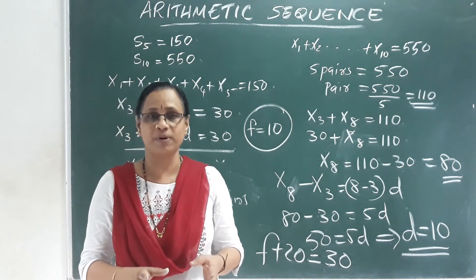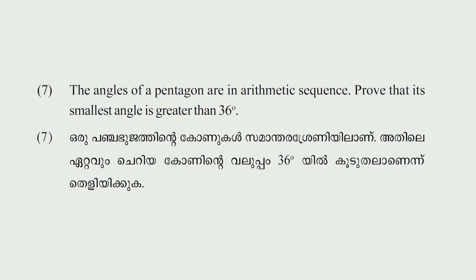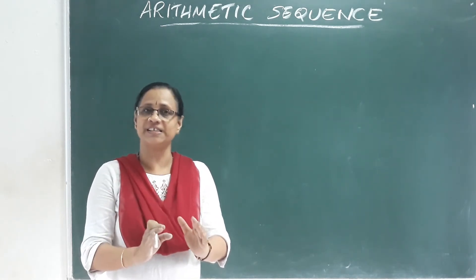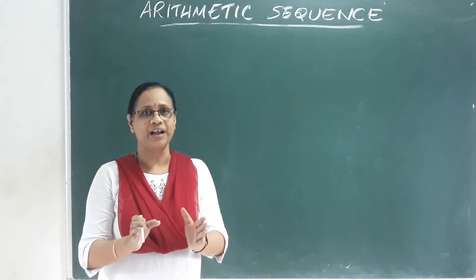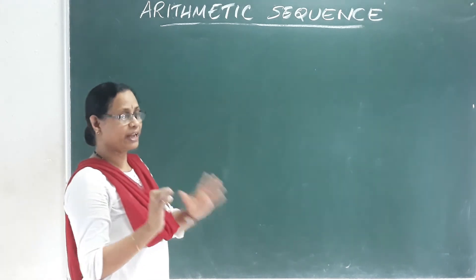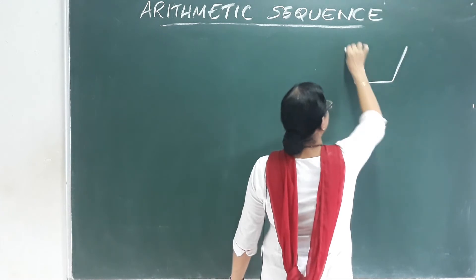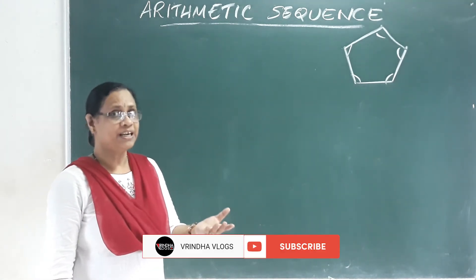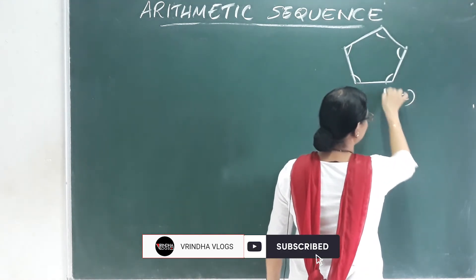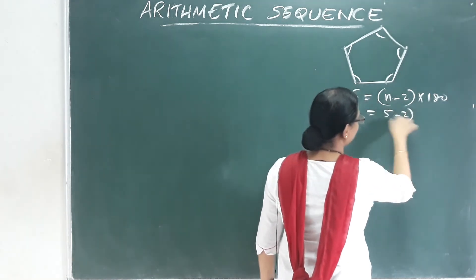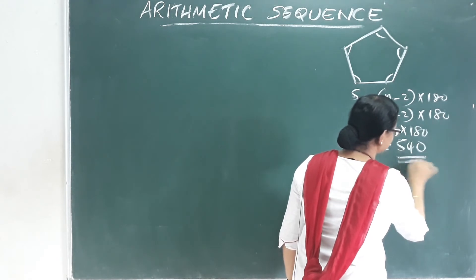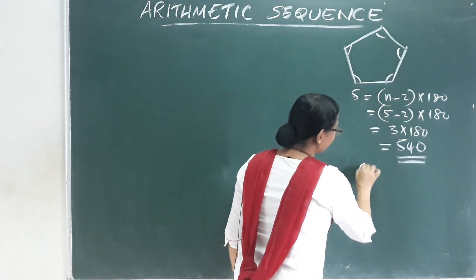Now let's go to the last question. The angles of a pentagon are in arithmetic sequence. Prove that its smallest angle is greater than 36 degrees. A regular pentagon has all angles equal, where the total sum is given by (n minus 2) times 180. For n equals 5, that is 3 times 180, which equals 540 degrees.